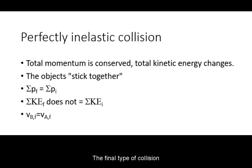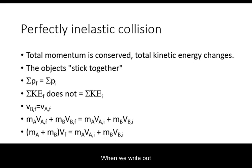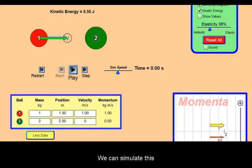The final type of collision is known as perfectly inelastic collision. Momentum is still conserved, kinetic energy changes, but the objects stick together. Their final velocities are the same. When we write out the terms for the conservation of momentum, this simplifies our equation. We can simulate this by setting elasticity to zero.